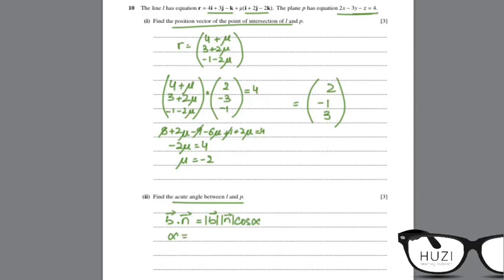So dot product of the normal and the direction vector. So this would be, the direction vector was 1, 2, minus 2. So 1, 2, minus 2 dot the normal. The normal was 2, minus 3, minus 1. Upon moduli of the direction vector, 1 plus 4 plus 4 is 9, root 9 is 3. Moduli of the normal, so 4 plus 9 is 13, plus 1 is 14. So 3 root 14.